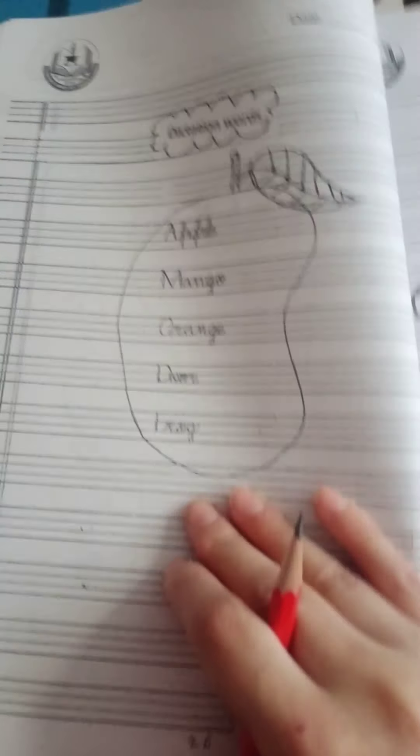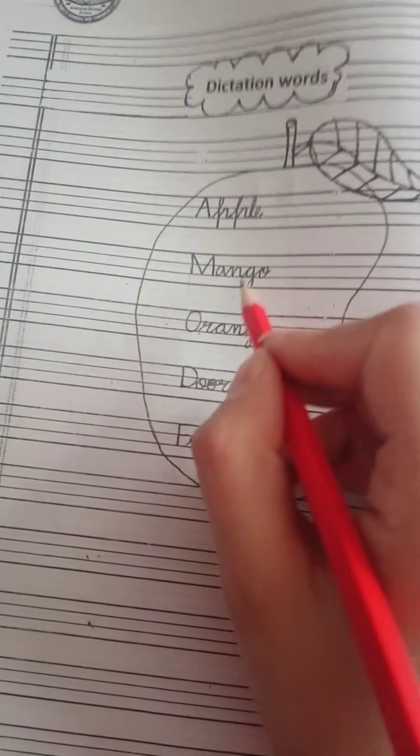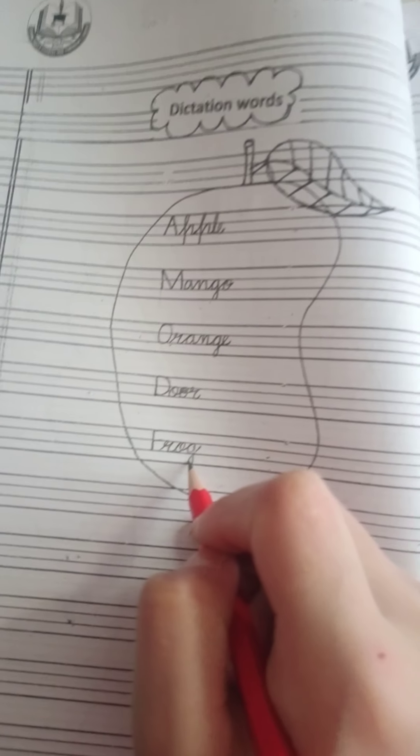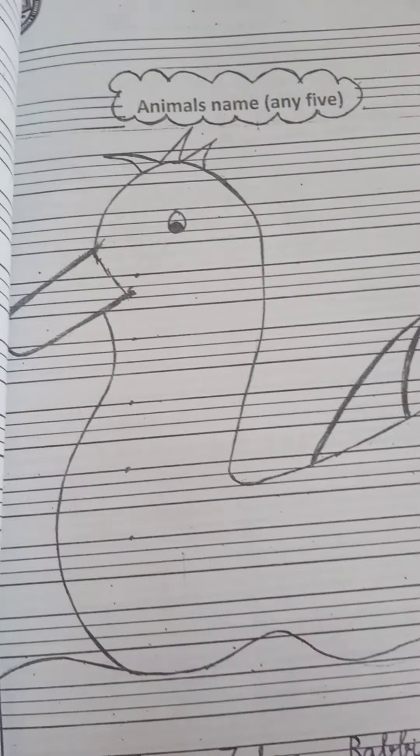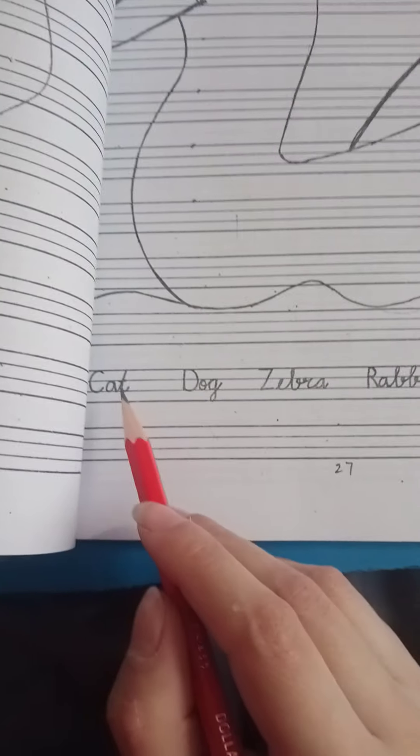Next page, here we can write apple, mango, orange, dog, frog. This is just learning. We can write name any five. Here we can mention: